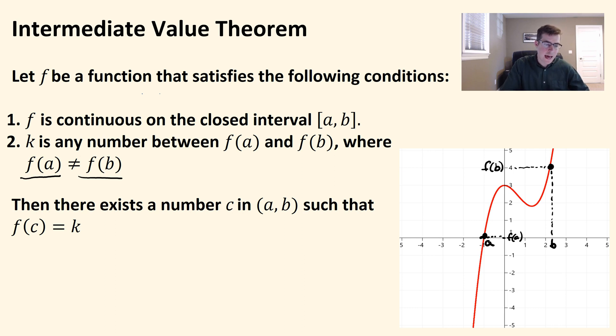So what it says is k is any number in between that. So for instance, if I chose k to be right here at like one or something,